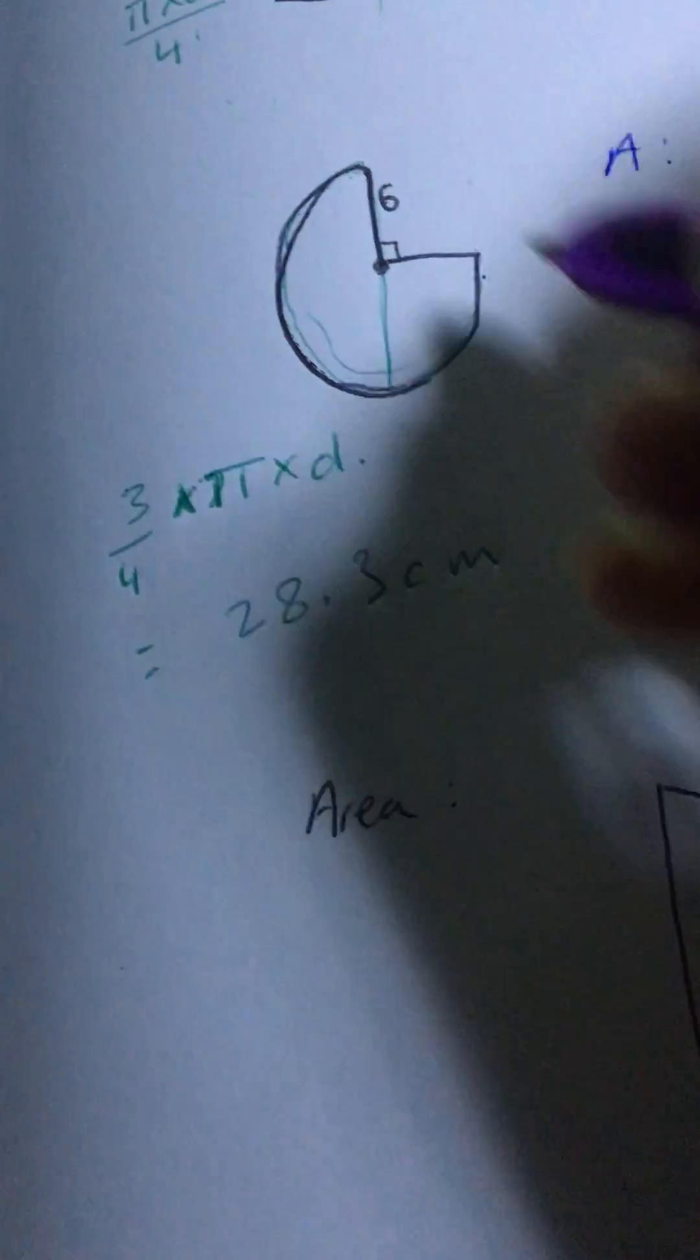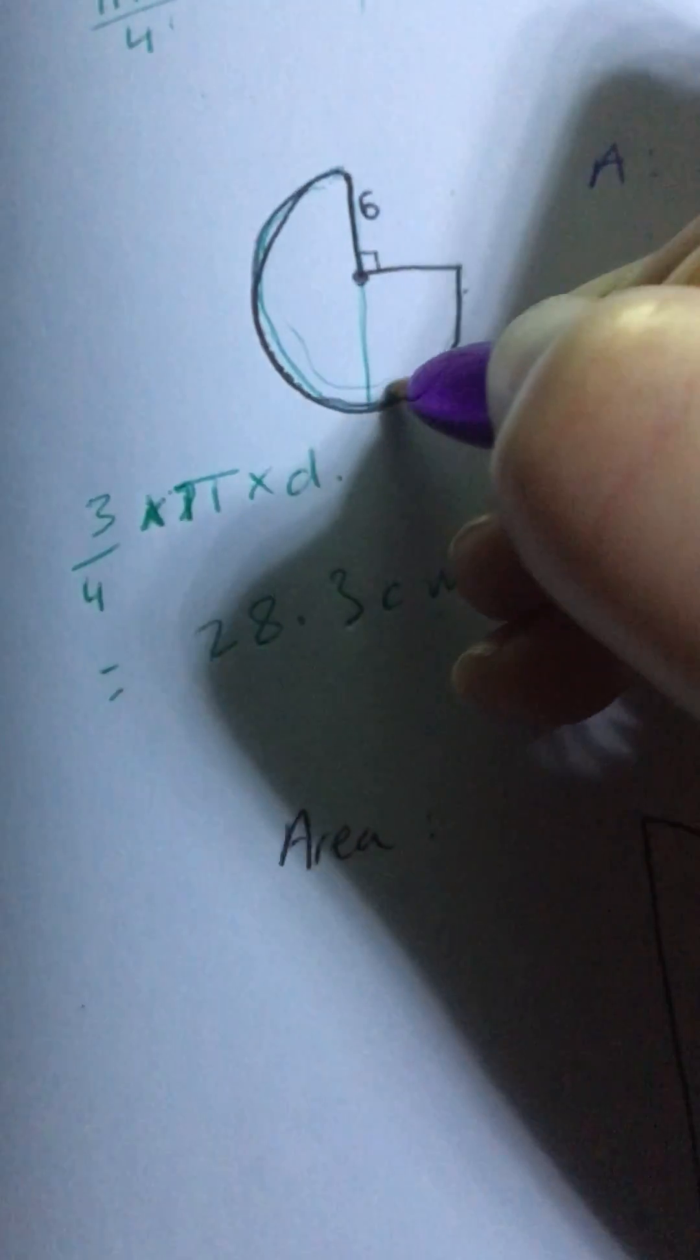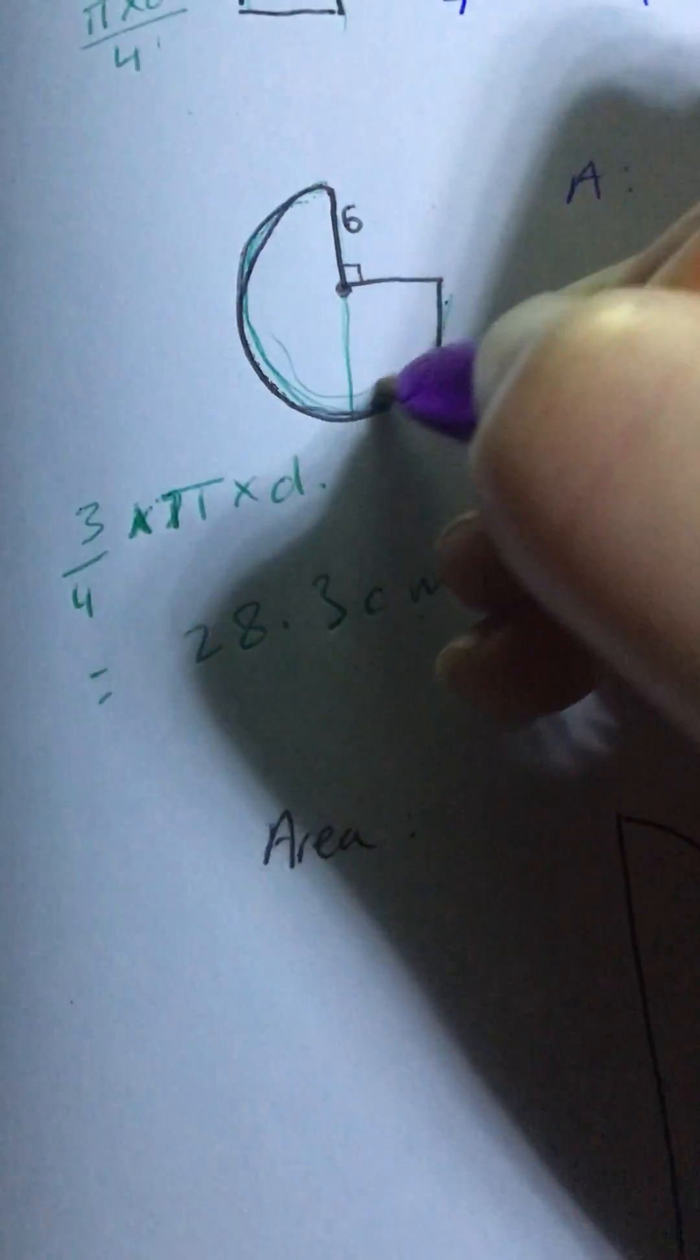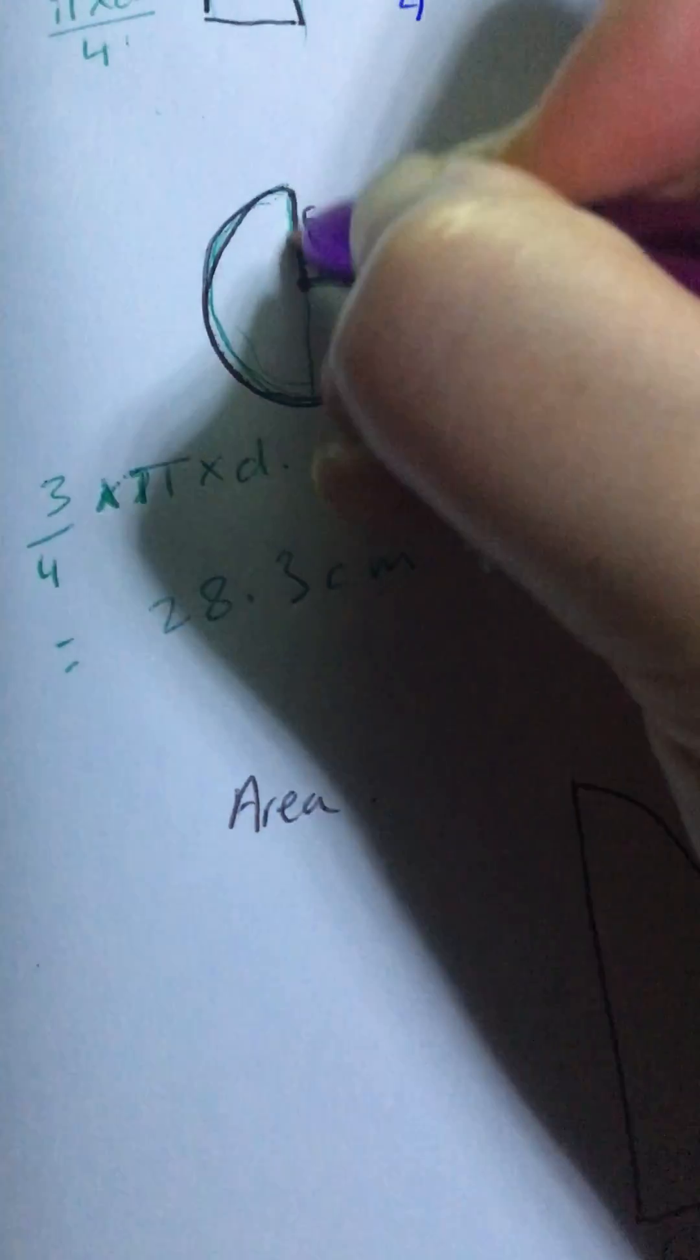Again, this only gives me that curve there, but if I wanted the perimeter of the whole shape, I want this curve plus this line plus that line.